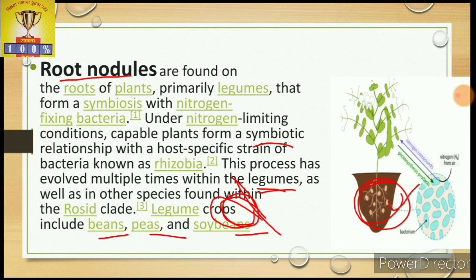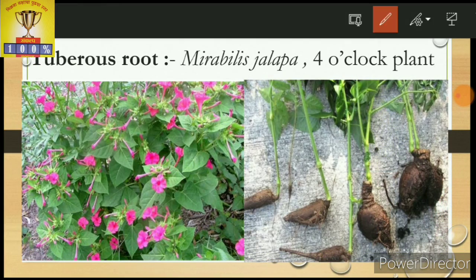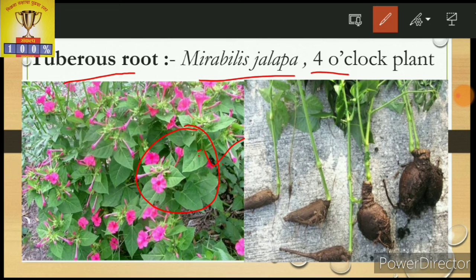The next modification is the tuberous root. This is a modification of the adventitious root. You can see the plant photo — this is Mirabilis jalapa, called the four o'clock plant, a dicot plant with colorful flowers. It has the tap root system, and this tap root becomes tuber-like. Because of this, it is called the tuberous root.